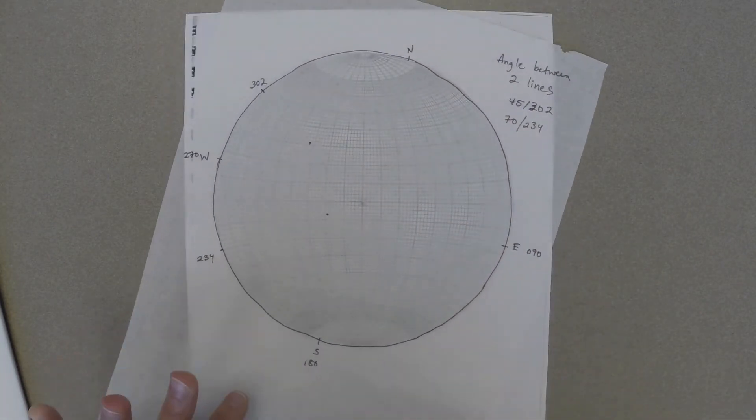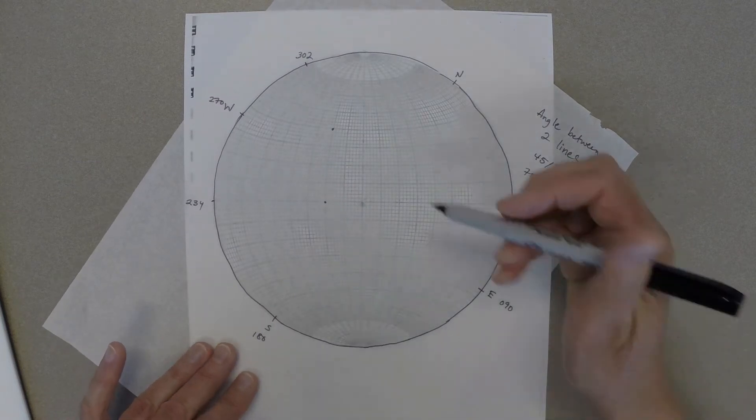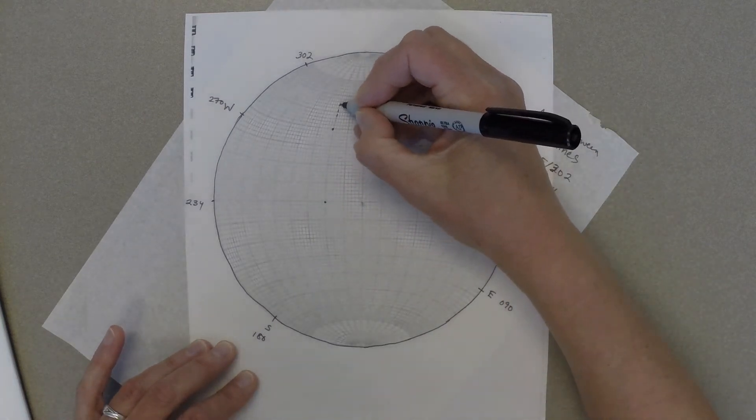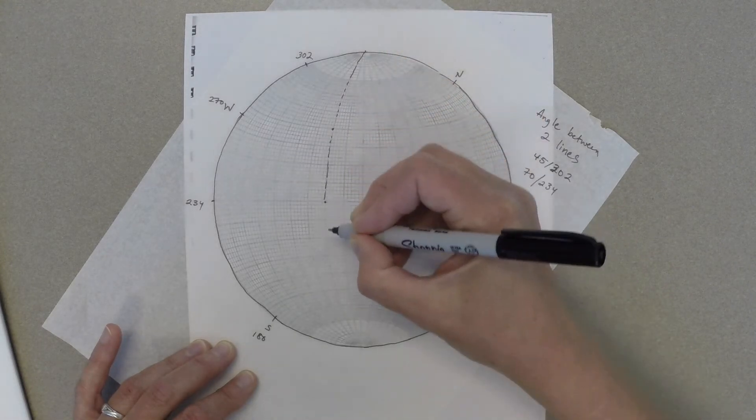Now, to measure the angle between those two lines, the first thing you have to do is spin the tracing paper until both of those dots lie on the same great circle. I'm just dashing that great circle to make it easier to see.